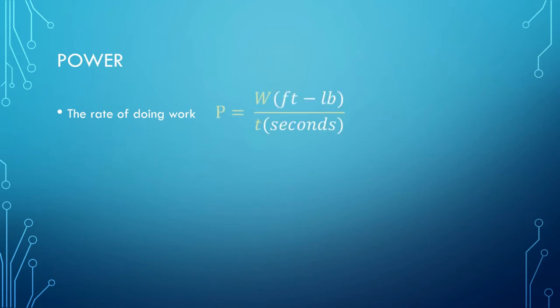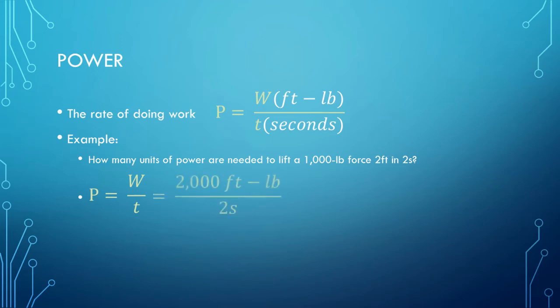Power is represented by the capital letter P and is equal to work over time. How many units of power are needed to lift a 1,000 pound force two feet in two seconds? As we calculated on the last slide, 1,000 pounds times two feet equals 2,000 foot-pounds of work. Divided by two seconds, we get 1,000 units of power.